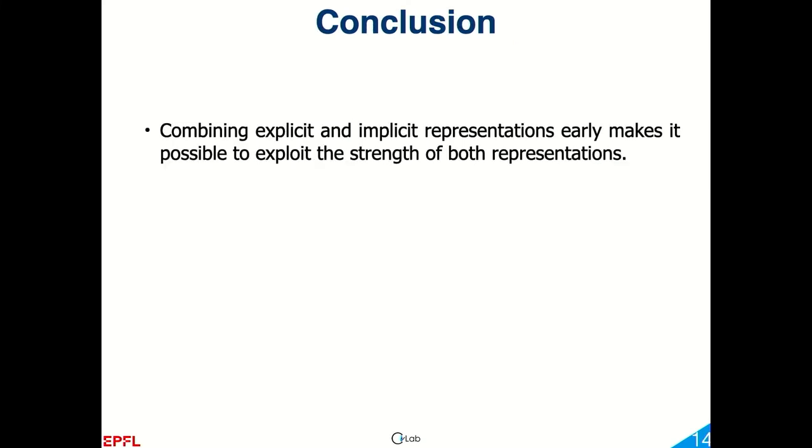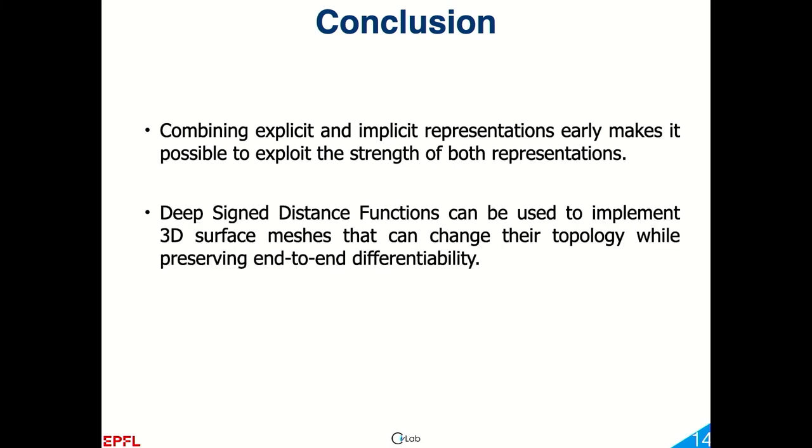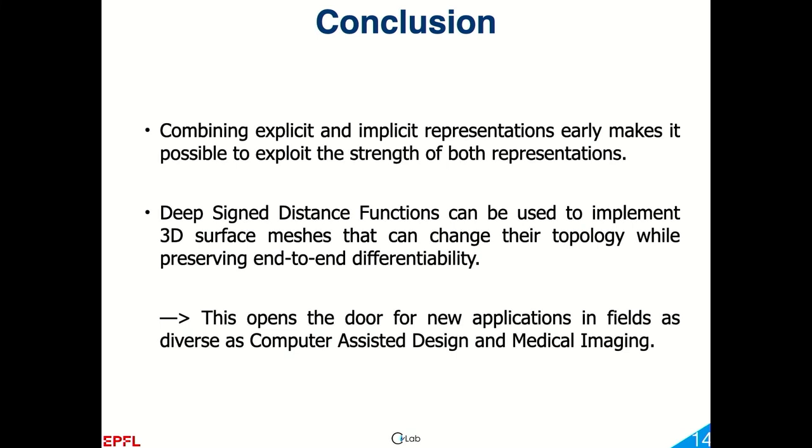Okay, so in conclusion, what I've shown is that we have an approach that allows you to compute explicit and implicit representation and get the best of both worlds. In practice we use deep signed distance functions that allow us to have surfaces whose topology can change while preserving end-to-end differentiability. This essentially will be a critical block into designing algorithms in many different fields, including computerized design, but also for example medical imaging where you want to model organs in the body, and where these techniques are completely applicable. That's it, thank you very much.